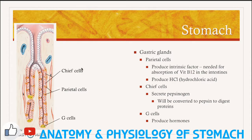The walls of the gastric glands are made up of several different types of cells. The parietal cells produce intrinsic factor and hydrochloric acid. Intrinsic factor will be needed in the intestines for the absorption of B12. Hydrochloric acid is what makes the stomach so acidic. Chief cells secrete an inactive proenzyme called pepsinogen. When it enters the acidic environment of the stomach lumen, the pepsinogen will be converted to the enzyme pepsin to help digest proteins. G cells are a type of enteroendocrine cells that produce hormones needed for digestion.